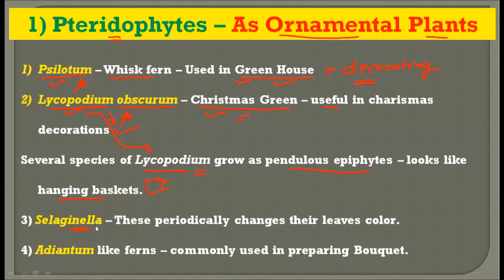The next ornamental species is Selaginella, which periodically changes the color of its leaves — it can be green, yellow, or orange — naturally forming very colorful decoration. The next fern used as an ornamental plant is Adiantum, which is used for preparing bouquets. In many functions, we use bouquets as gifts, and Adiantum fern can be used in them.